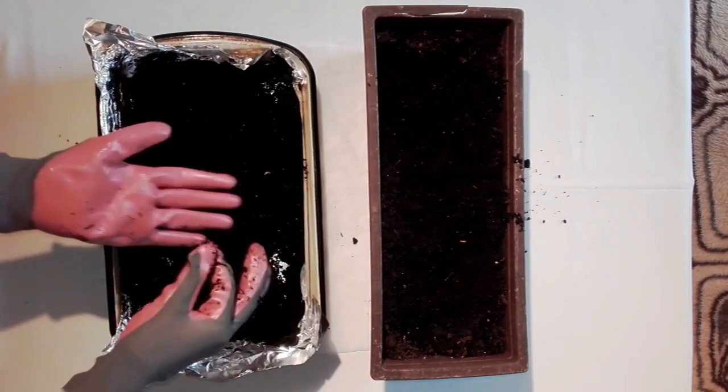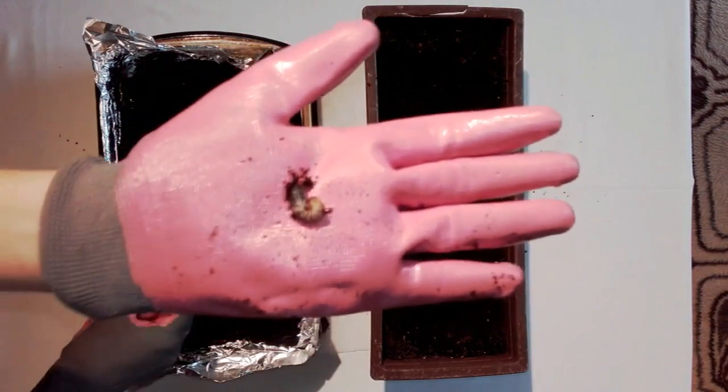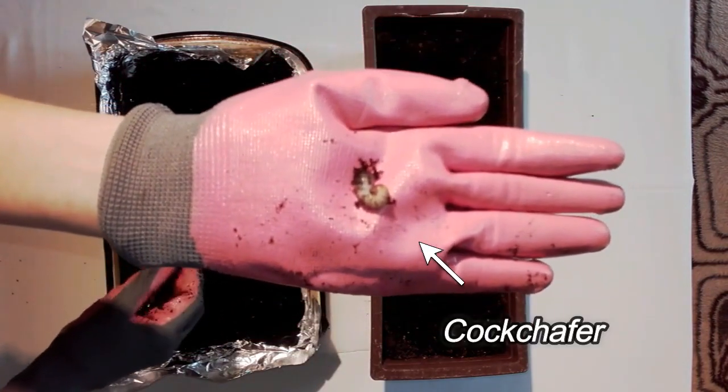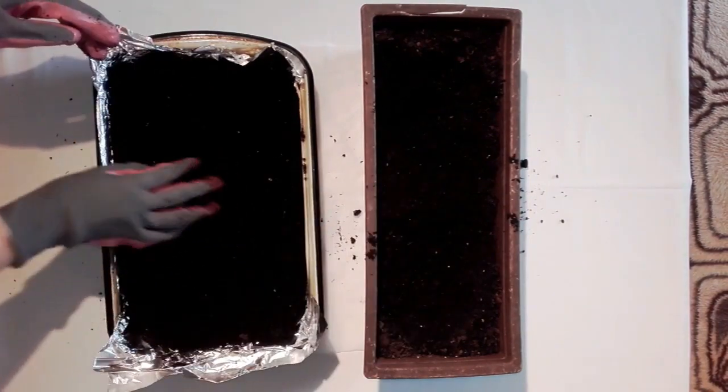You can see that I found this little guy. This is larvae of Melolonta melolonta. He is dangerous for vegetables, mainly potatoes.